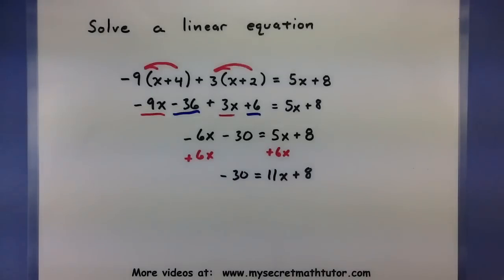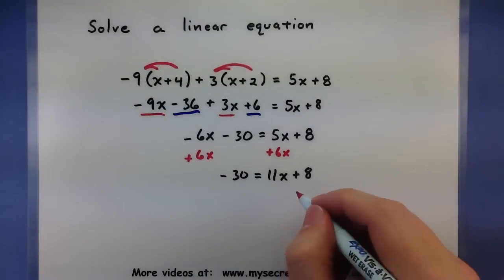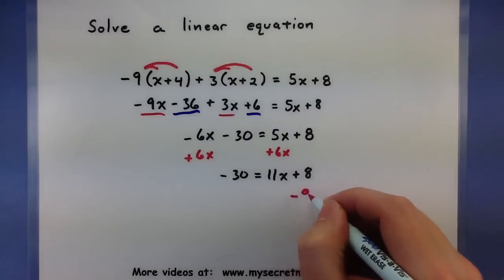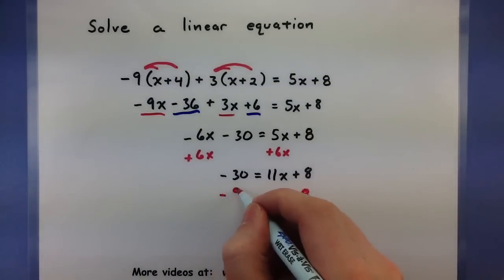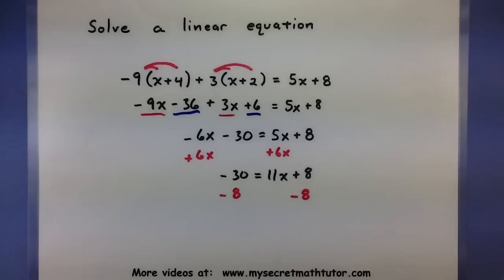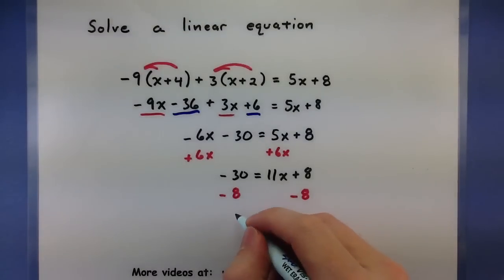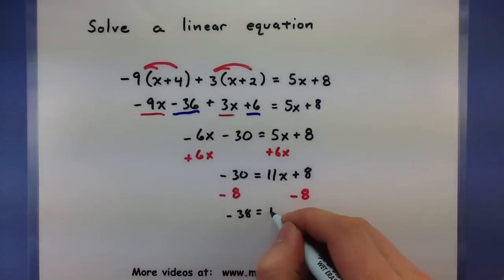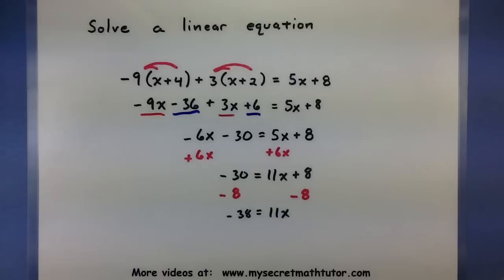I want to make sure that this x is completely by itself on one side of the equation. That means I'm going to need to move over this 8, so negative 38. And finally divide both sides by 11.